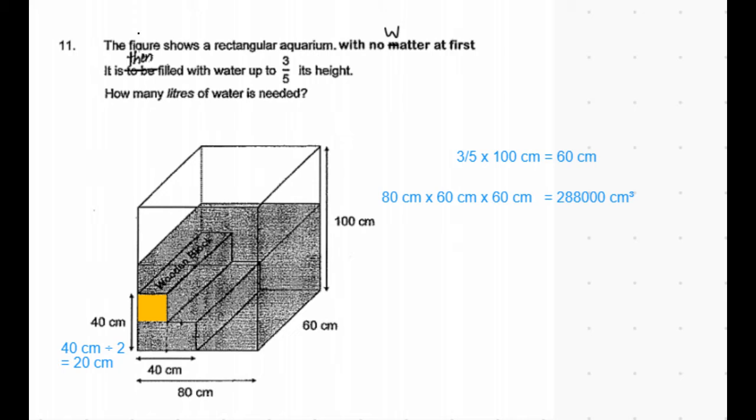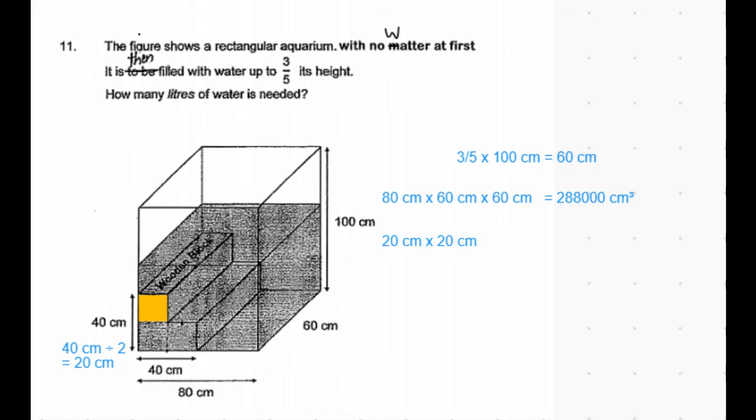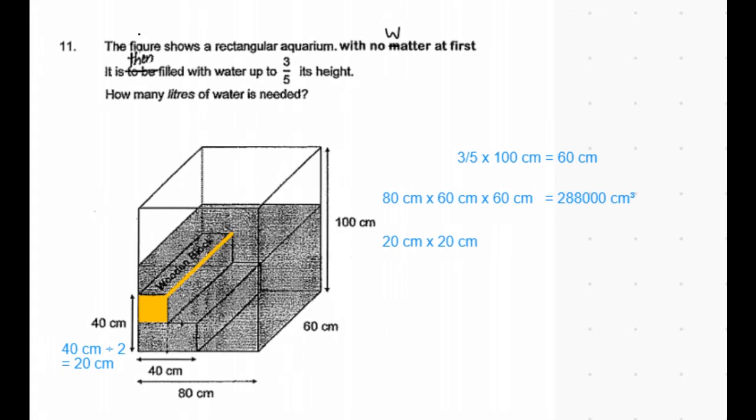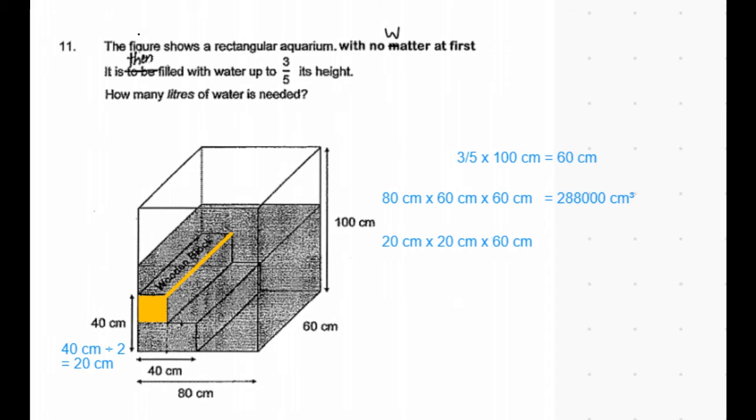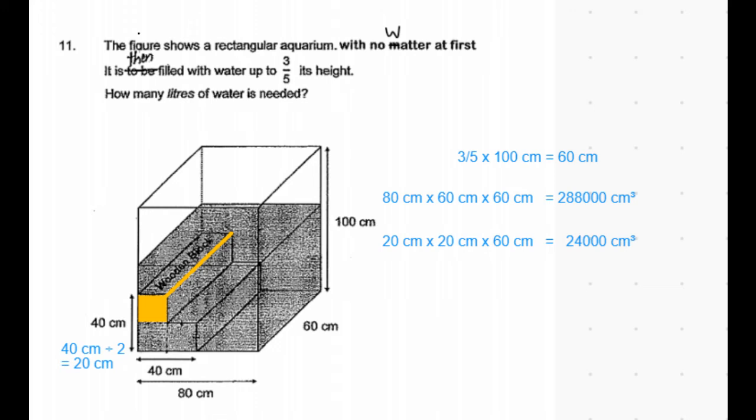So the volume of one block is 20 centimeters times 20 centimeters times the breadth of the block. The breadth of the block is same as the breadth of the container, which is 60 centimeters. So the volume of one wooden block is 24,000 centimeter cube.